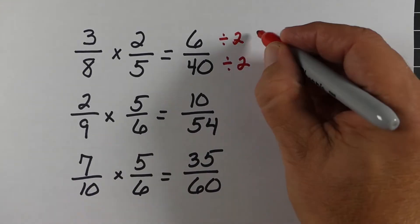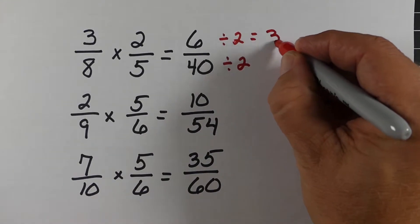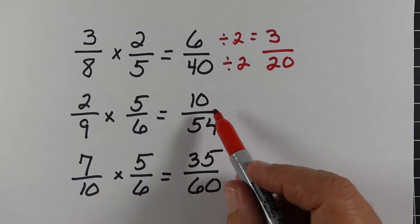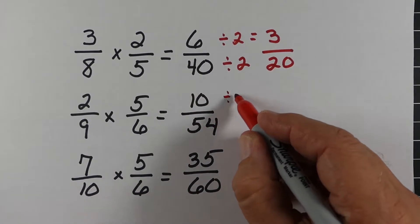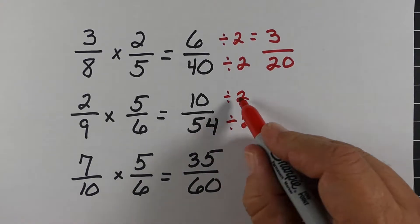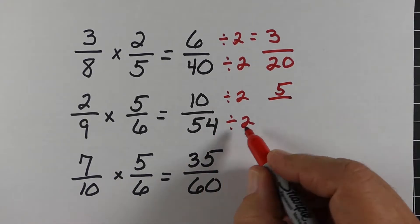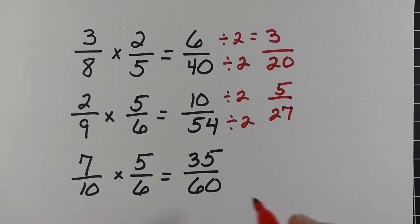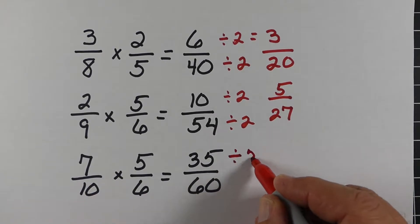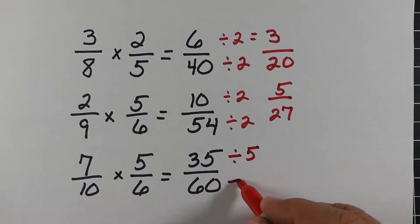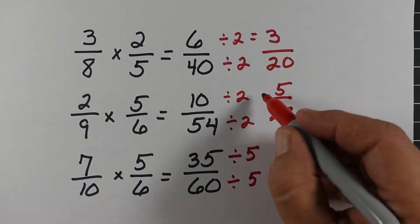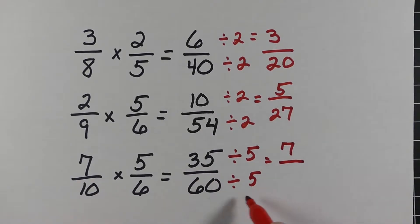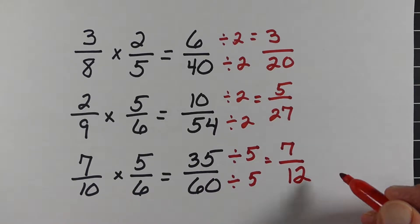We're looking for a number that we can divide into both numerator and denominator. The first one we can divide by two, and we get three-twentieths. The next one, we can divide by two again because they're both even numbers, so we end up with five-twentieths. The next one, 35-sixtieths, we can divide by five. Anytime you see a number that ends in five or zero, we can always divide by five, so we end up getting seven-twentieths.